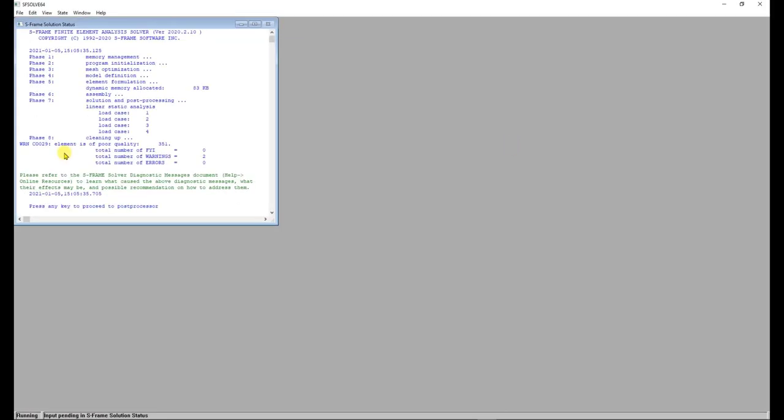I notice a warning message, CO029, element is of poor quality, and this message is indicating that some of the triangular or quadrilateral elements in the model may have a shape that is undesirable for accurate analysis.